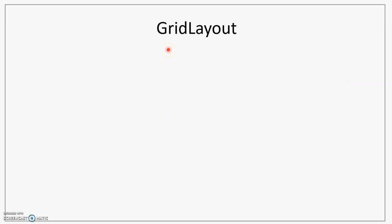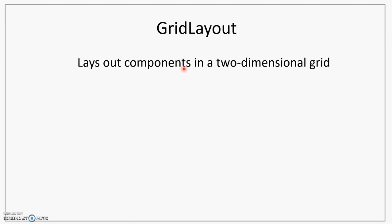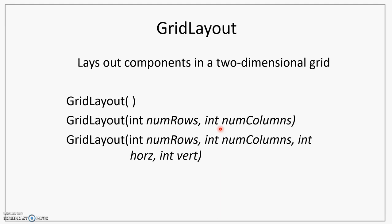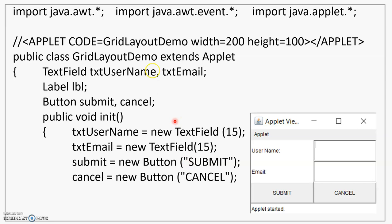The next layout is GridLayout. GridLayout creates a two-dimensional table or grid and components are added into it. The default constructor creates a basic grid. You can also call a constructor specifying the number of rows and columns you wish to have, and along with that, you can specify the horizontal and vertical spacing between the components.